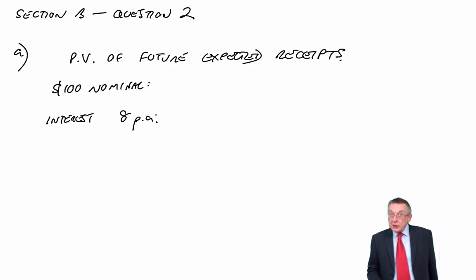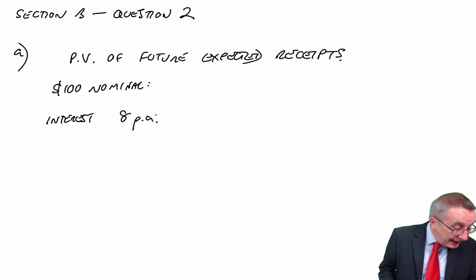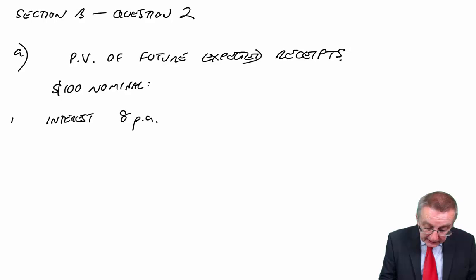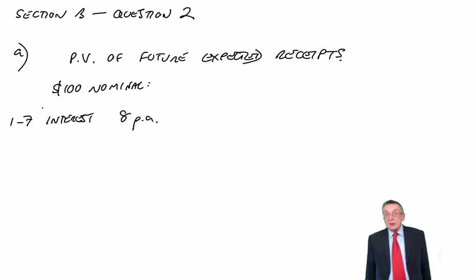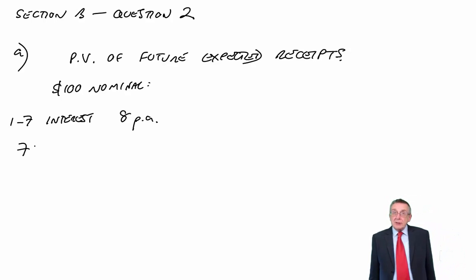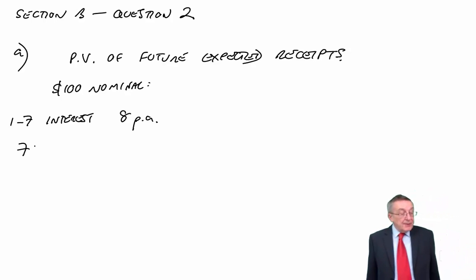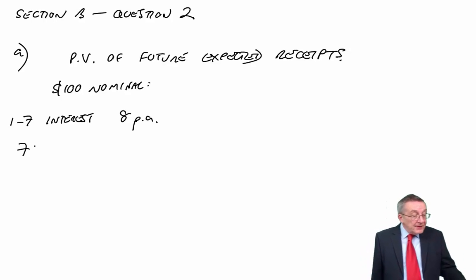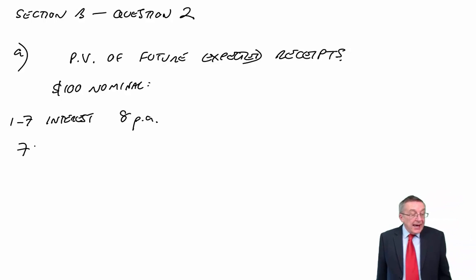Let's have a look on a loan note of $100 nominal. What receipts would an investor expect on those loan notes? Well, first of all, they'll expect interest. The coupon rate is 8%. So they'll expect on $100 nominal, they'll expect $8 a year, each year until redemption or conversion. And it's in seven years' time. So from years 1 to 7, interest of $8.